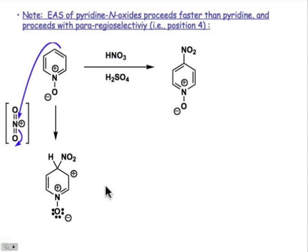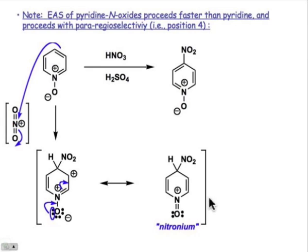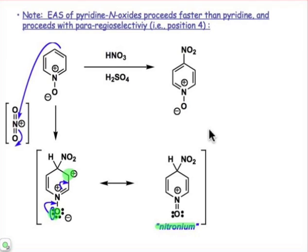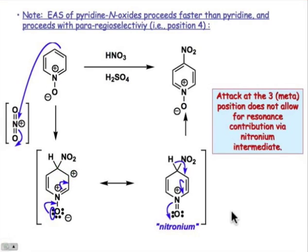If we attack at the 4-position with the electrophilic nitronium cation, we end up with an intermediate that has an important resonance contributor. It uses the non-bonding pair of electrons on the oxygen to donate into the π system — ultimately into the empty atomic orbital on that carbocation — and we can create a zwitterionic intermediate as an important contributor. But that's only possible if we attack at the 4-position with the pyridine N-oxide. That goes on to the electrophile dissociation step, the last step, and we end up with substitution at the 4-position.